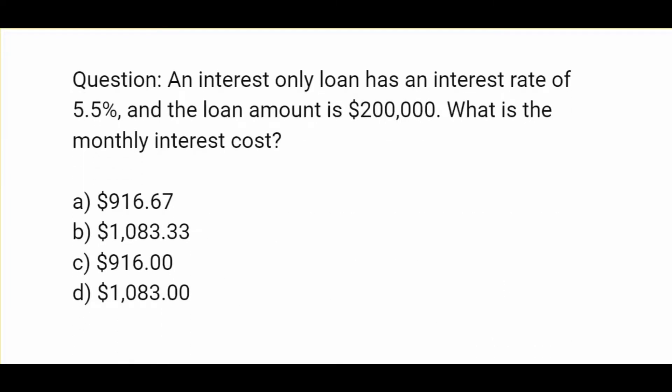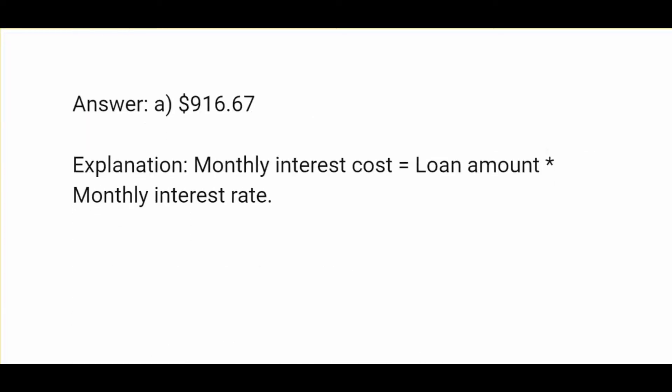An interest-only loan has an interest rate of 5.5% and the loan amount is $200,000. What is the monthly interest cost? Options are $916.67, $1,083.33, $916, or $1,083. The answer is $916.67. Monthly interest cost equals loan amount times monthly interest rate.